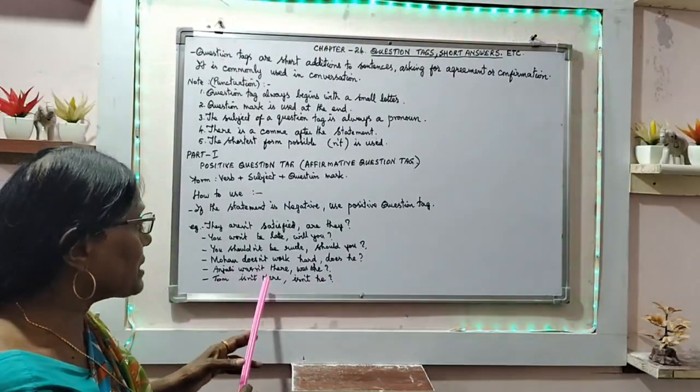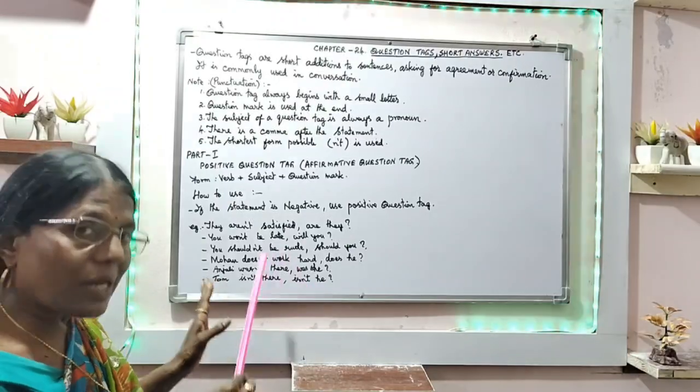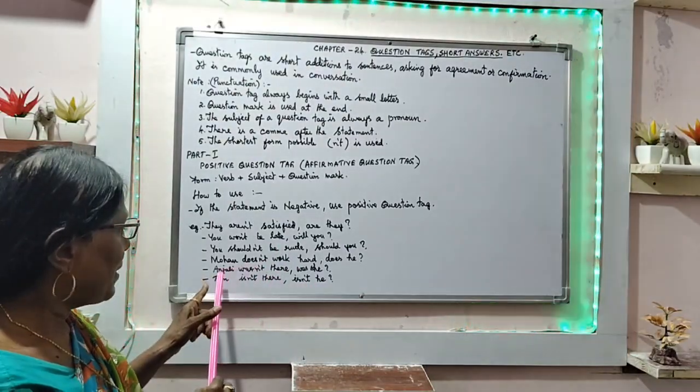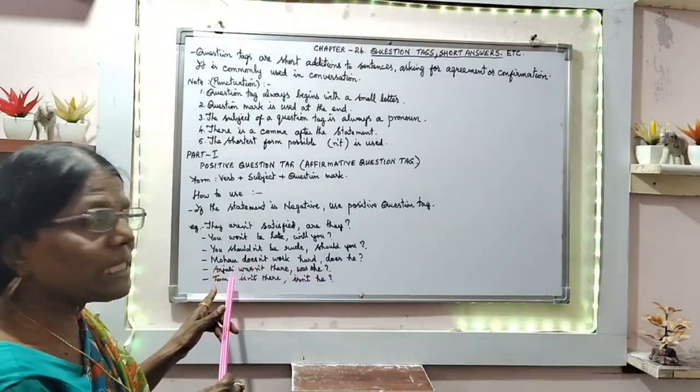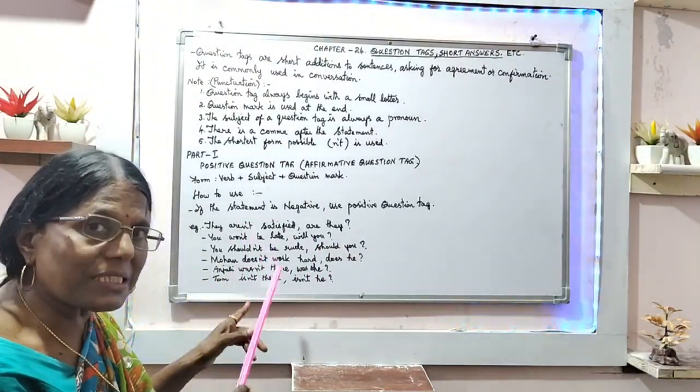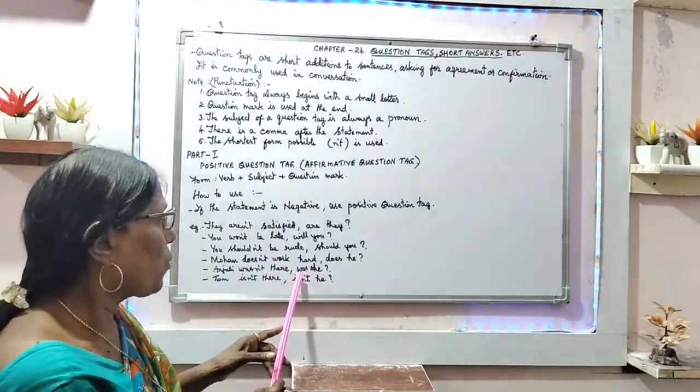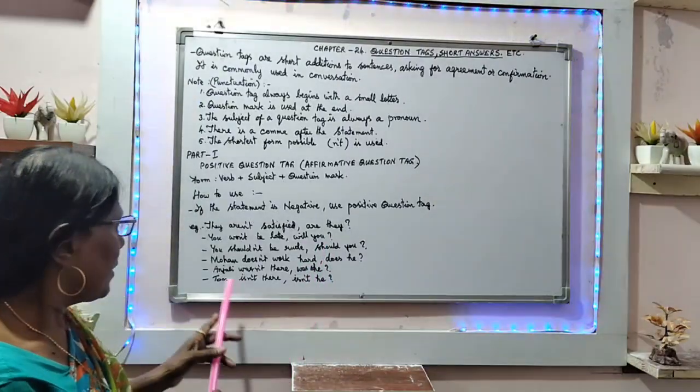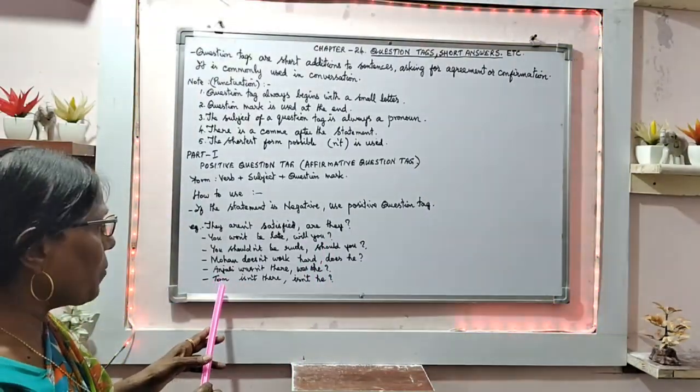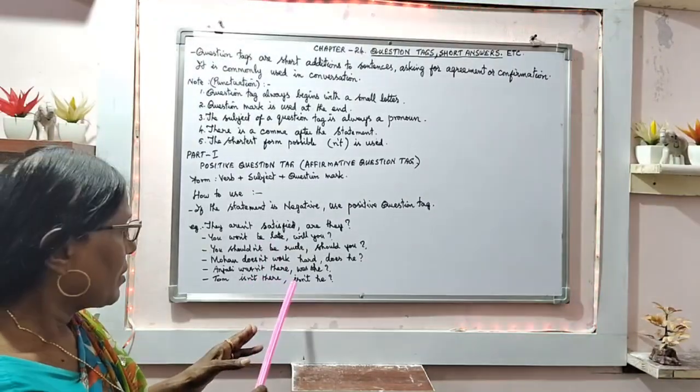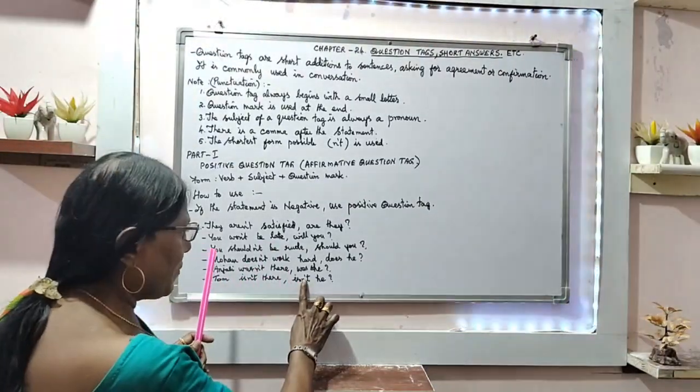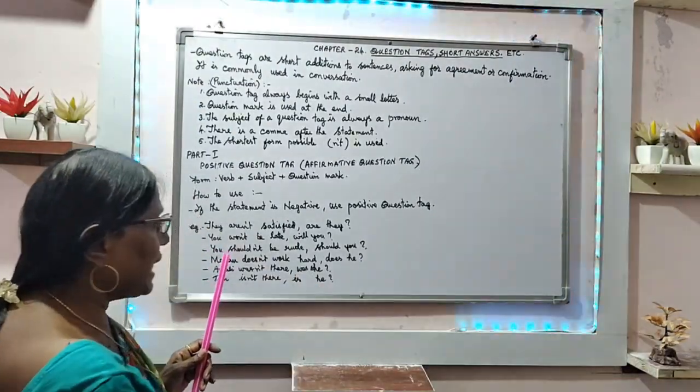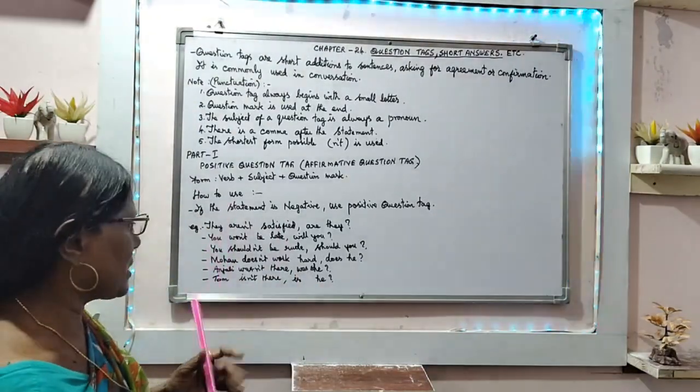Next is, Anjali wasn't there. Here also, same thing. Proper noun cannot be given. You need to use pronoun. Anjali is a girl, feminine gender. Therefore, was she. Next is, Tom isn't there. Tom isn't there. Then, is he. That is a question tag.